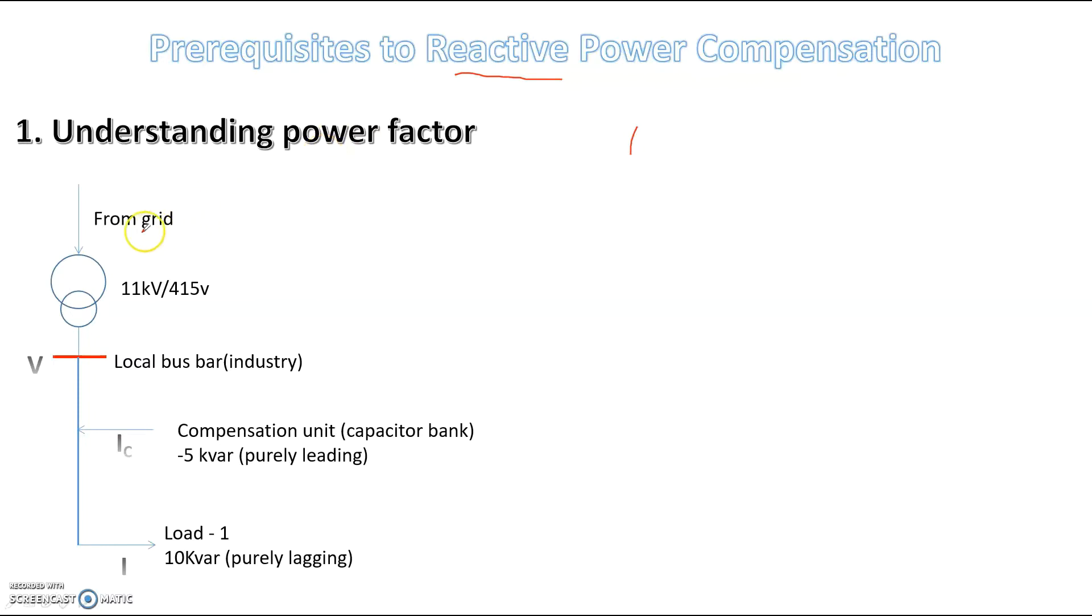The first thing that you need to understand is the single line diagram. This is the supply grid. This is a step down transformer, stepping down a 16 kV voltage level to a 415 volt line to line voltage. We will be having a local bus bar. From this particular place, your jurisdiction will start. You have to take care of whatever is happening here. Whatever is going on here is not under your control. It is totally governed by the power utility, the grid or the state electricity board.